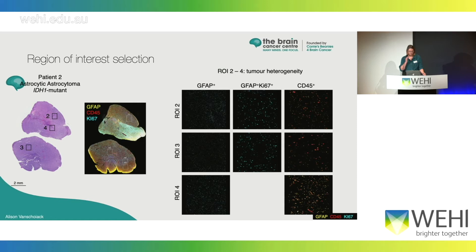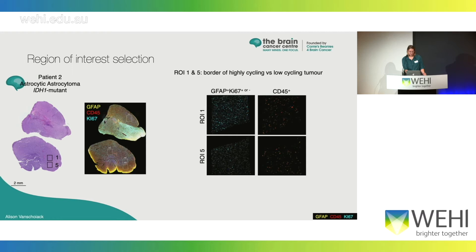In the IDH1 mutant anaplastic astrocytoma, we similarly had regions of the tumour that appeared homogenous, where we wanted to investigate cycling and non-cycling tumour cells and immune cells. We also identified a region right at the border of a highly cycling and a non-cycling region of tumour, which I'll talk about in a bit more detail.